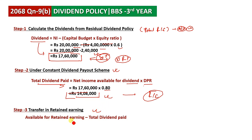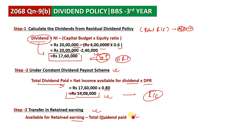Available for retained earnings equals net income available minus total dividend paid. The dividend according to residual dividend policy is subtracted from available retained earnings. If dividend paid is 14,08,000 and available was 17,60,000, then the actual transfer to retained earnings is 17,60,000 minus 14,08,000, which equals 3,52,000.